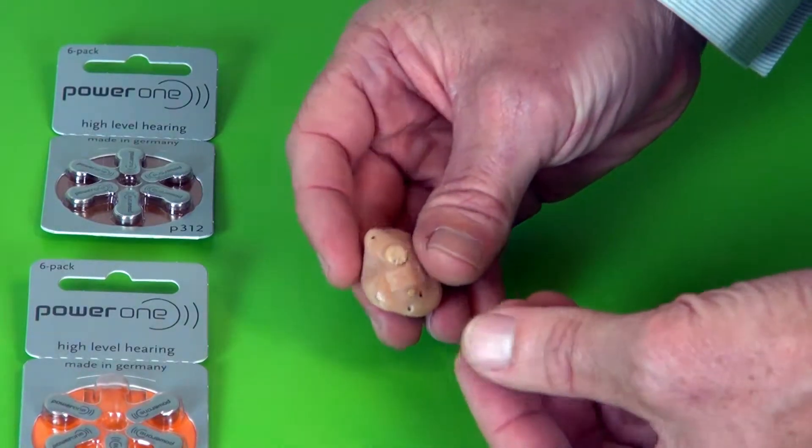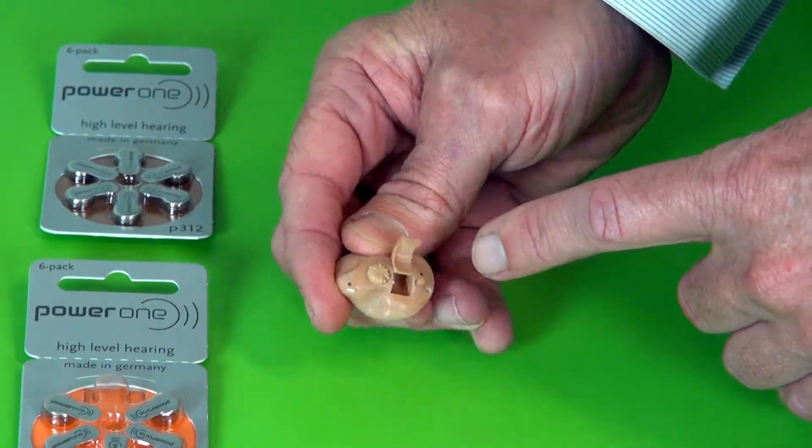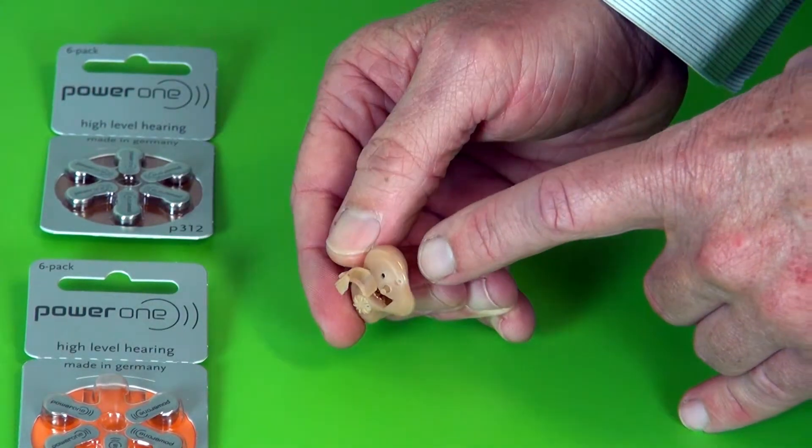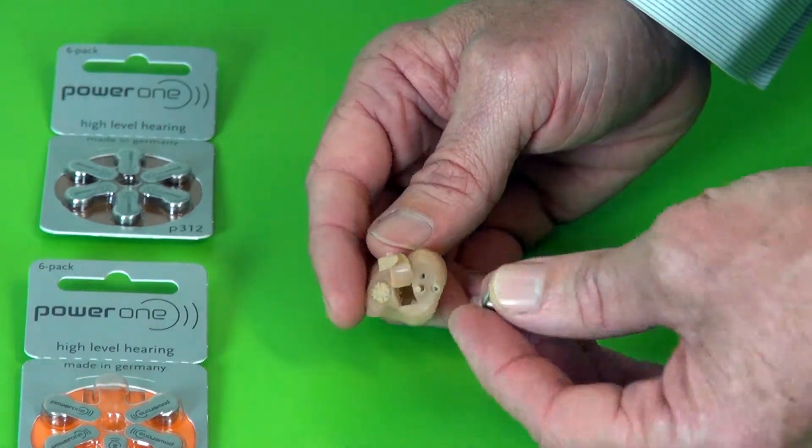To put it into your hearing aid you need to open up the battery door. On the battery door there is a little shelf and then a nice open surface. The side with the shelf you will put the ring on.